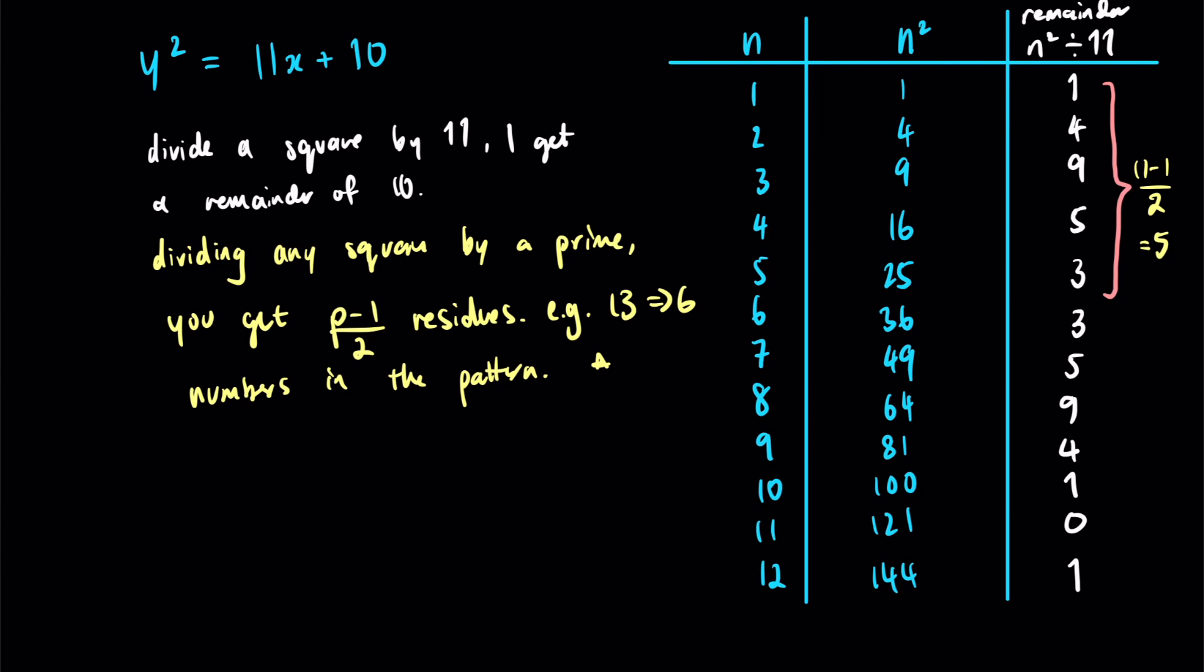So therefore, looking at these remainders, 1, 4, 9, 5, and 3, I know I will never get a remainder of 10. Okay, so I will never have a remainder of 10 if I divide a square by 11. Therefore, y² equals 11x plus 10 has no integer solutions.